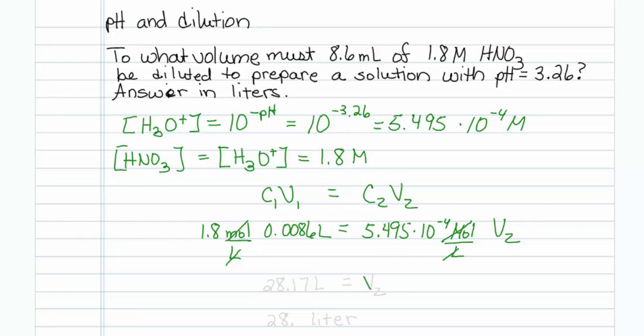The answer for V2 is 28.17 liters—that's a lot of material. I'm only good to two significant figures, so technically I would input 28 liters. That's how you deal with pH and dilution.